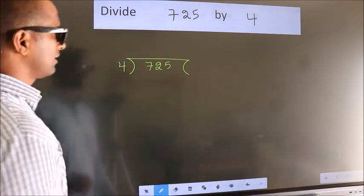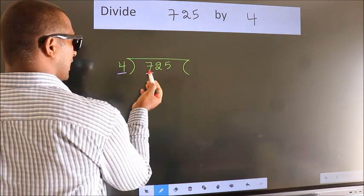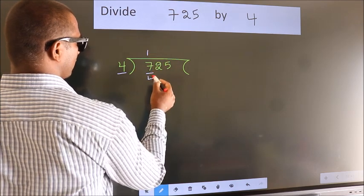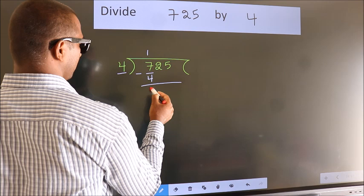Next. Here we have 7, here 4. A number close to 7 in the 4 times table is 4 times 1 equals 4. Now we should subtract. We get 3.